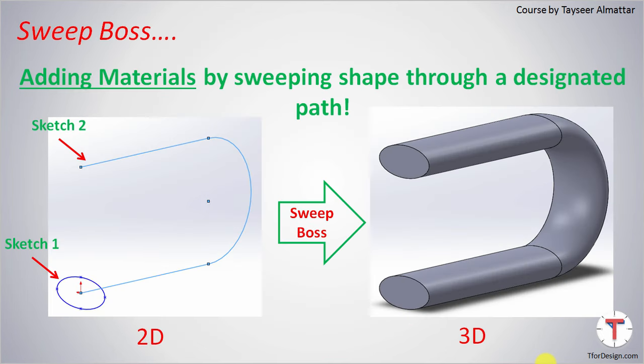Starting with Sweep Boss. Sweep Boss is basically adding materials by sweeping a shape through a designated path. To apply Sweep Boss, we would need to make two sketches, usually in different planes. This is a little bit different than the other features we used so far. With Sweep Boss, you can go from the two sketches on the left to the 3D model on the right.